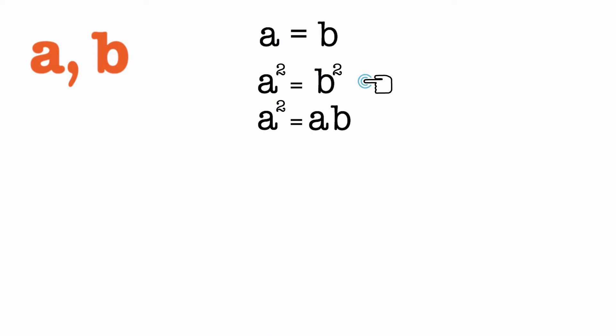So we get A squared equals AB. Now if we subtract the same number from both sides, the equation should still hold, right? So we subtract B squared from both sides.